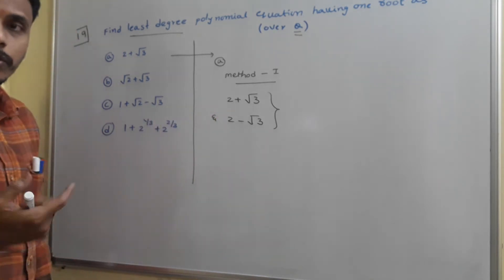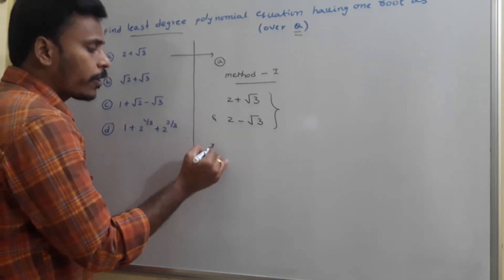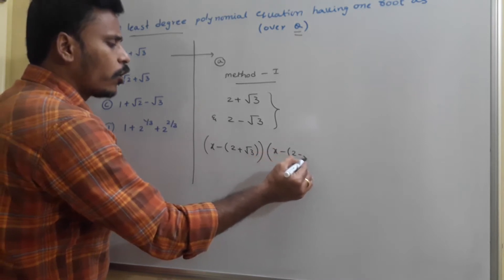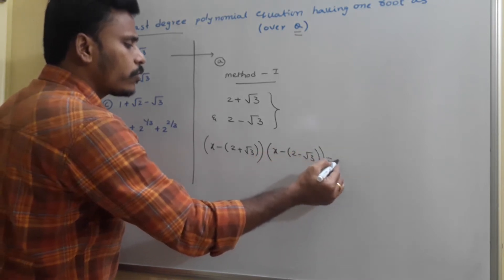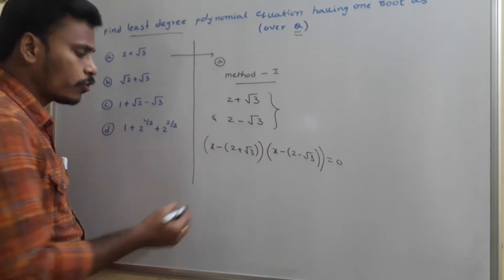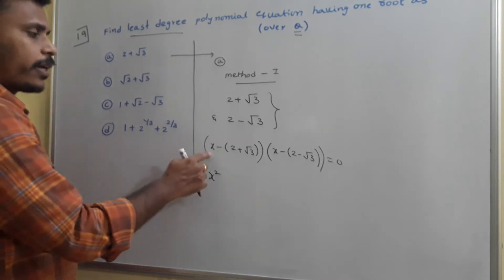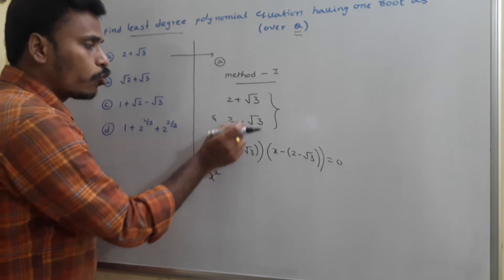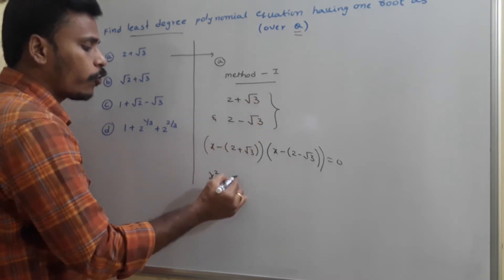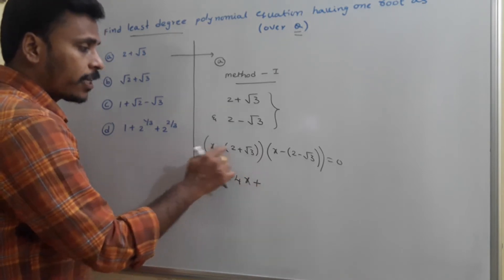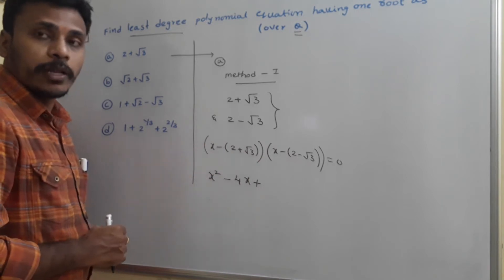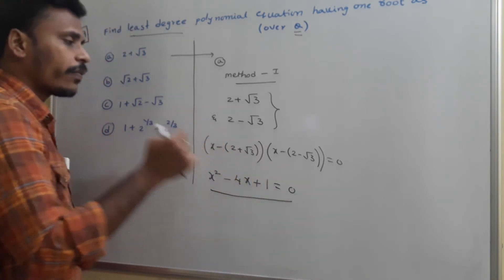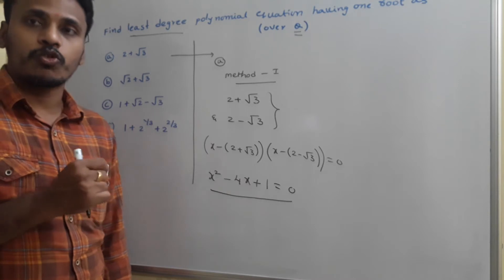Since these two are the only roots, we find the polynomial equation as: (x minus (2 plus root 3)) times (x minus (2 minus root 3)) equals 0. Multiplying: x squared minus 4x plus (2 plus root 3)(2 minus root 3). The sum of the roots is 4, so minus 4x; and the product is 4 minus 3 equals 1. So the equation is x squared minus 4x plus 1 equals 0.